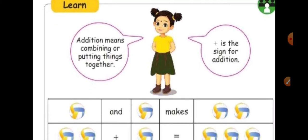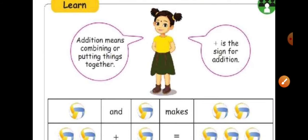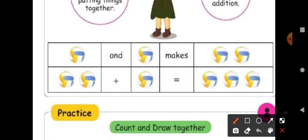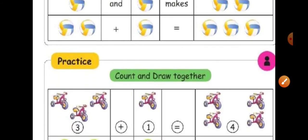And then the symbol for addition is plus — symbol or sign. Plus is the symbol for addition. So they have given you some examples. Balls — one, two, three — totally three balls on one side. And then you have to add one, two. Three plus two is equal to what? One, two, three, four, five — three plus two is equal to five. Like this, you have to count and put the answer.